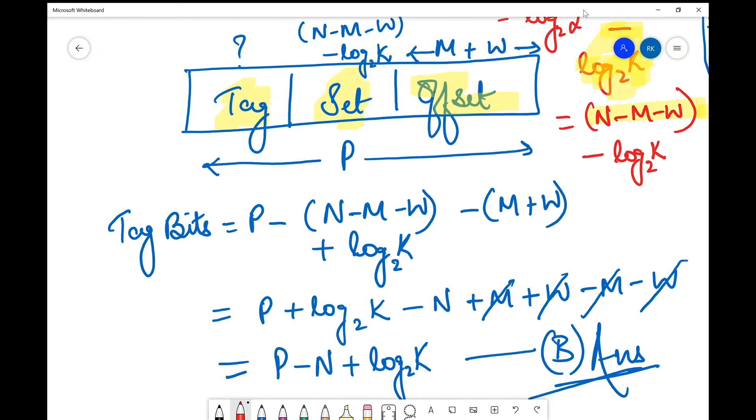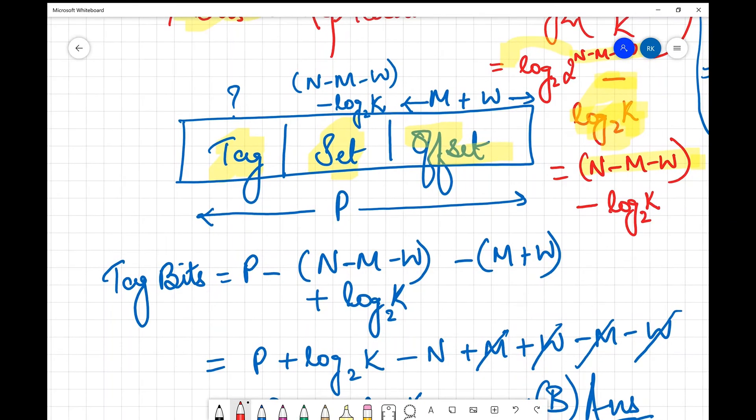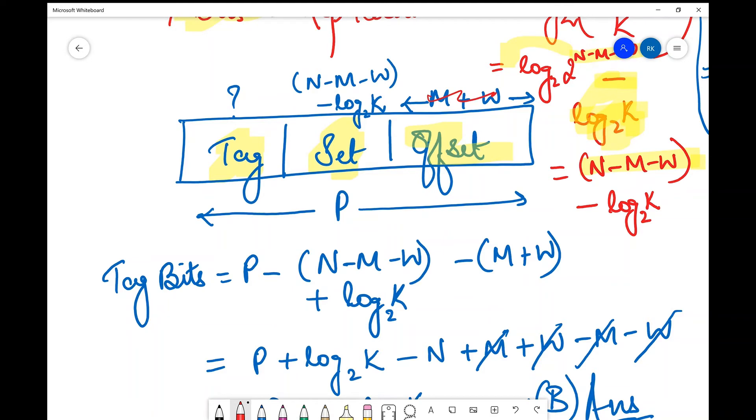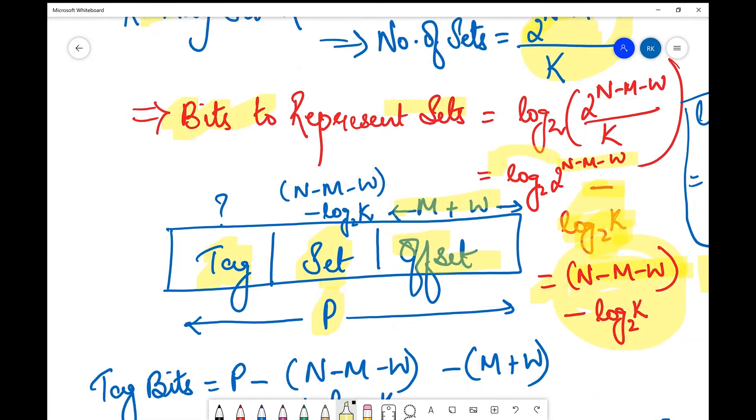When we fill up these entire things, we have m+w for our offset, then we have n-m-w-log₂(k) for the set field. Tag bits we don't know. Also, in the beginning they said that the physical address space is 2^p bytes, so we have p bits for representing the entire address.